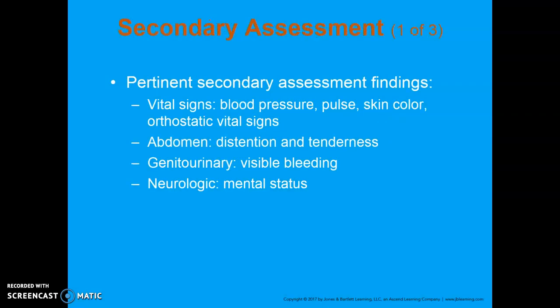The secondary assessment may be performed on scene or en route. Oftentimes it's easier to perform en route to ensure more privacy for the patient. Some things to cover in your secondary assessment include vital signs, looking at the abdomen for distension, tenderness, or guarding, and possibly examining the genitalia for any visible bleeding. Continue talking to your patient to assess mental status — if they start getting abnormally sleepy, mumbling, or not answering questions as expected, something is going on.